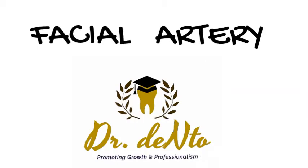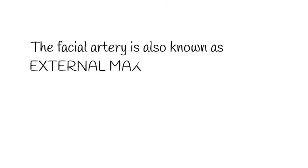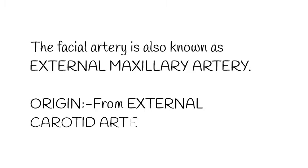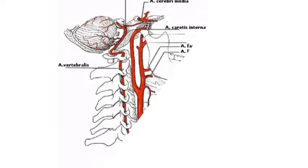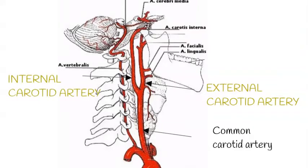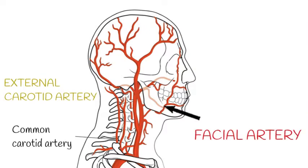I'm going to discuss the facial artery and its branches. The facial artery is also known as the external maxillary artery. It is an anterior branch of the external carotid artery, arising in the carotid triangle, and supplies the face, palate, tonsil, and nose. In the picture, you can see the common carotid artery dividing into the external carotid artery and internal carotid artery. The facial artery originates from the external carotid artery.